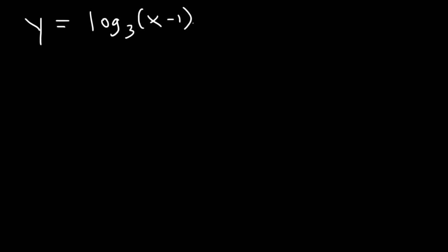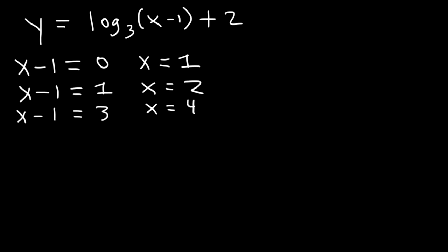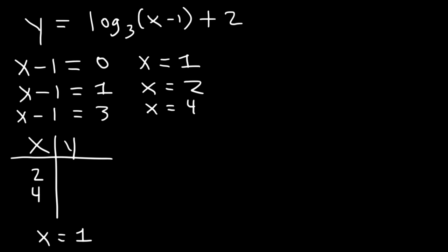Here's another one. Log base 3 of (x minus 1) plus 2. Feel free to pause the video and try it. Take the inside part, x minus 1, and set it equal to three things: 0, 1, and whatever the base is — in this case, 3. Find the value of x. The first gives us the vertical asymptote, so x equals 1 is the vertical asymptote. The next gives x equals 2, and then 3 plus 1 is 4. So the two x values we're going to use are 2 and 4.